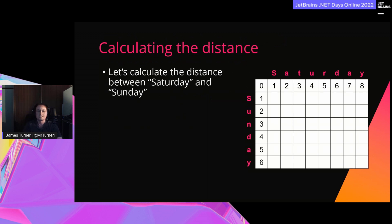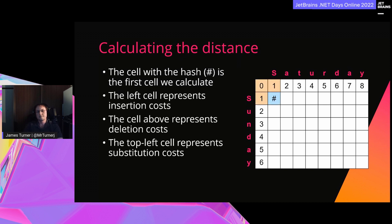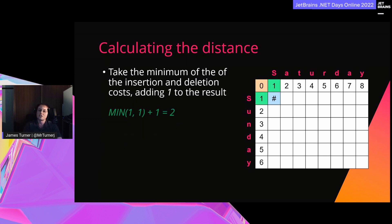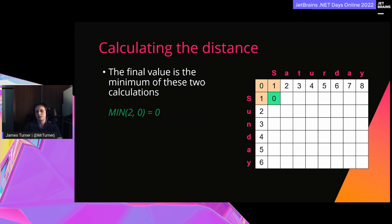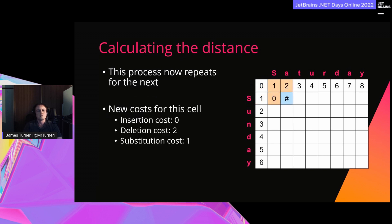Let's walk through a simple example with 'Saturday' and 'Sunday.' Imagine a matrix on screen — the blue cell is the cell we're calculating. The cell to the left is the insertion cost, above is the deletion cost, and the top-left cell is our substitution cost. We track the minimum value of insertion and deletion costs, then add one — in this case, two. For substitution cost, we add one only if the current letters don't match. Here both are capital S, so they match, giving a substitution cost of zero. We take the minimum of both values, so the final result saved to the cell is zero.